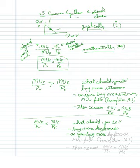As you buy more keyboards, the marginal utility falls, which we know from the law of diminishing marginal utility, and it falls until the two are equal again.